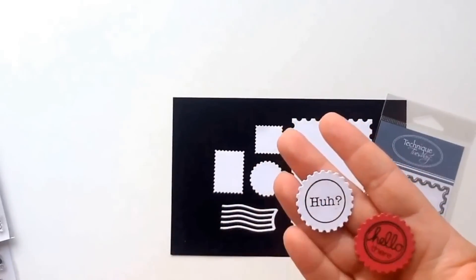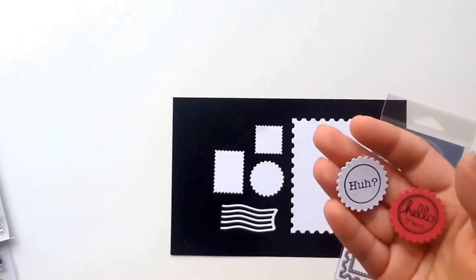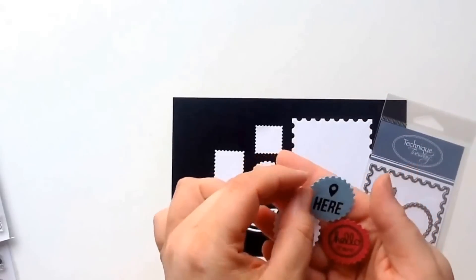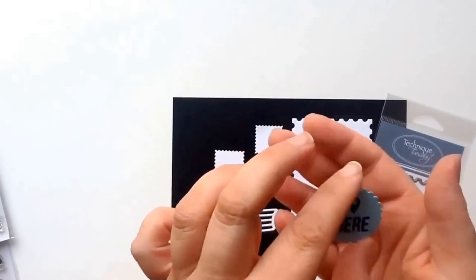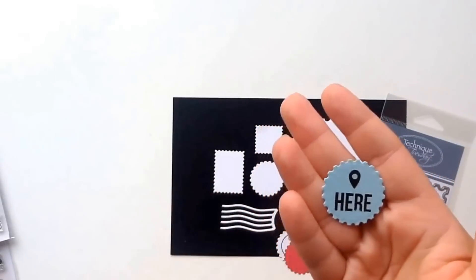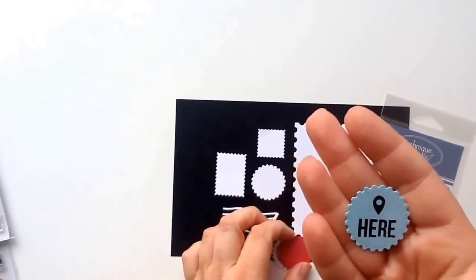So I stamped 'huh' and then 'hello there' on here. And then also Technique Tuesday usually has some small icons in some of their stamp sets, and so I took the On Vacation stamp set and stamped that geotag and the word 'here' right on top of it. Looks like it was made to go there.